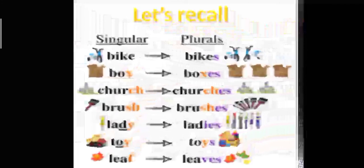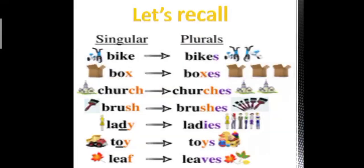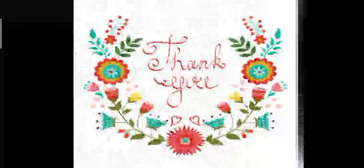Now let's recall what we have learnt in this chapter. Bike becomes bikes by adding an S. Box ends in X, so we add ES — becomes boxes. Church ending in CH — we add ES — becomes churches. Brush becomes brushes. Lady — we remove the Y and add IES — becomes ladies. Toy becomes toys by adding an S. And leaf becomes leaves. With this we come to the end of this chapter.